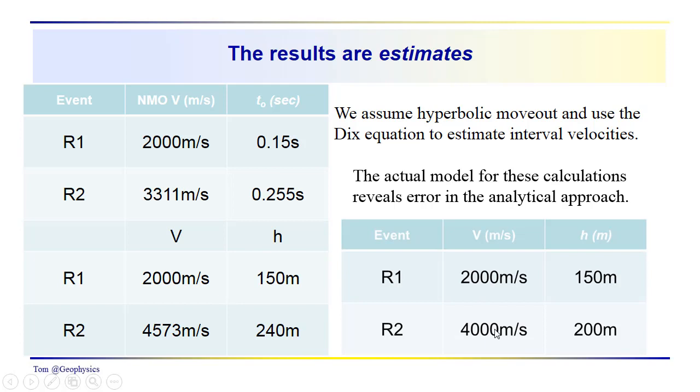We made this a simple problem. We only did it for two layers. In the first layer, we're right on. We get 2,000 meters per second. We get the accurate thickness, but you can see where we are off in our estimate of the interval velocity and also the thickness of layer two.